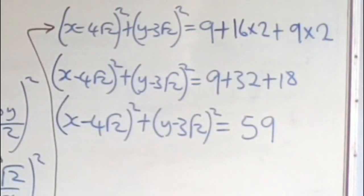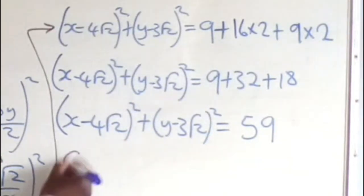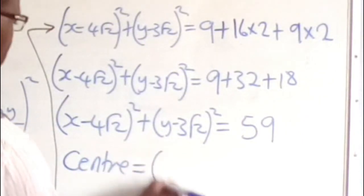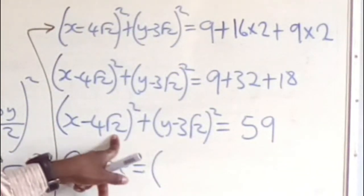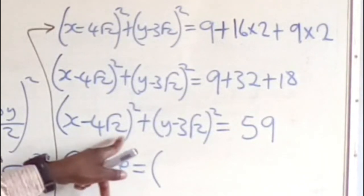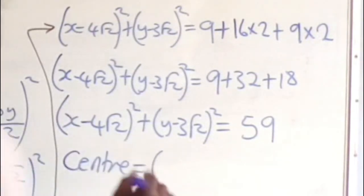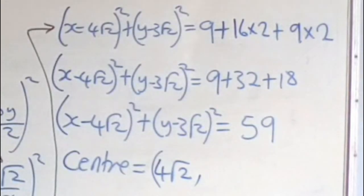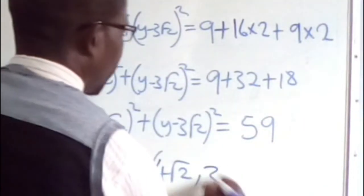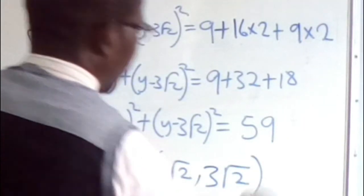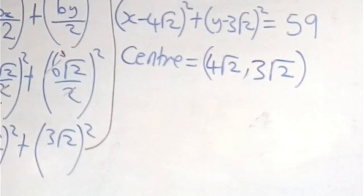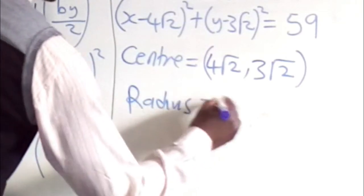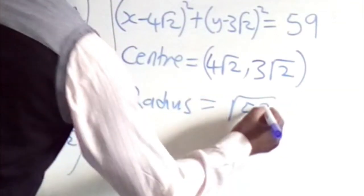At this point we can now pick the center. The center is equal to (x, y). In x there, we pick negative 4√2, which becomes positive 4√2. So the center is (4√2, 3√2). After the center, we can get the radius. The radius is going to be √59.